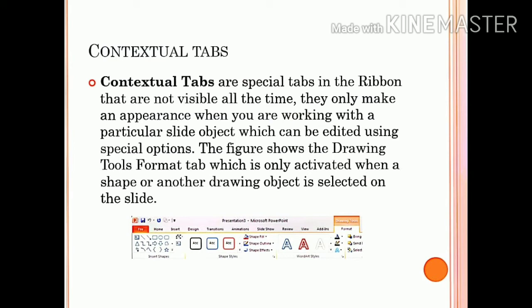The contextual tab will appear when a particular object in the slide is selected and the options are present. This is the Drawing Tool Format tab, which is activated when a shape or drawing object is selected on the slide. Special tabs are not visible all the time; they only appear when working with a particular slide object which can be edited using special options.